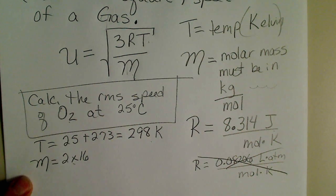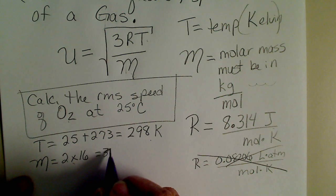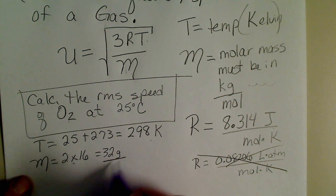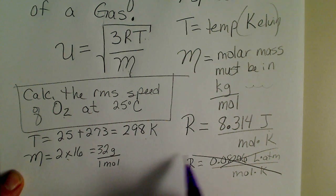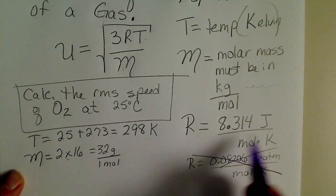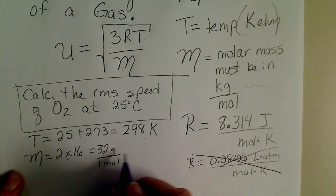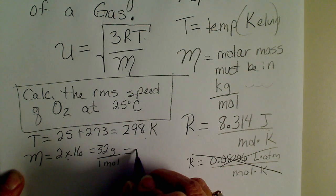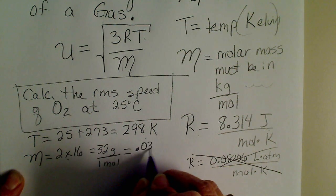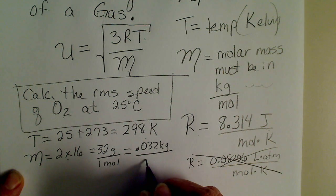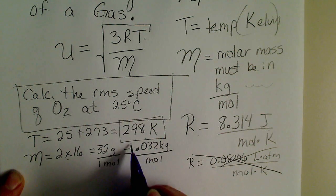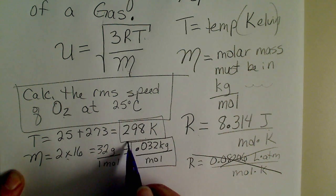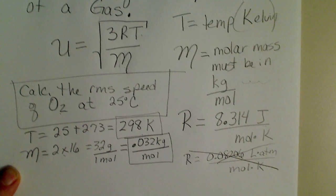One oxygen atom weighs 16 grams, so the molar mass comes from the periodic table and the formula. Two oxygen atoms is going to give us 32 grams per one mole, but since our R value has the joule unit in it, we're going to have to convert this to kilograms. So that's 0.032 kilograms per mole.